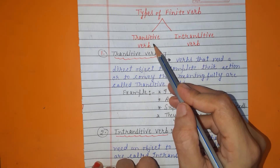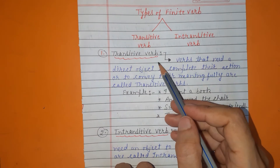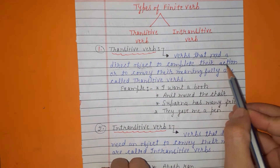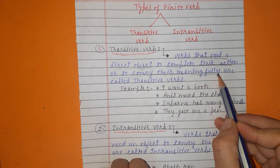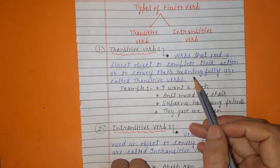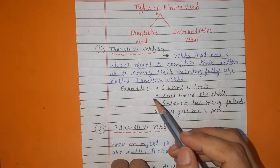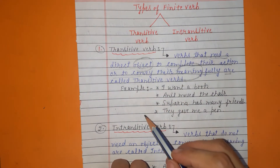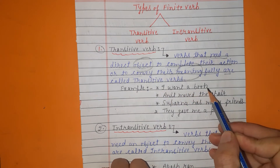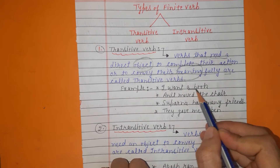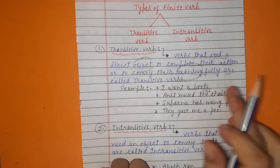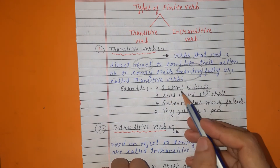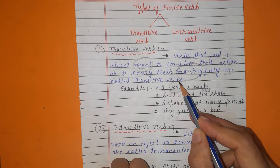Now there are two types of finite verb: transitive verb and intransitive verb. What is a transitive verb? Verbs that need a direct object to complete their action or to convey their meaning fully are called transitive verbs. Example: 'I want a book.' Here 'I' is the subject, 'want' is the verb, and 'a book' is the object. If we don't write the object, 'I want' — the meaning is not clear.